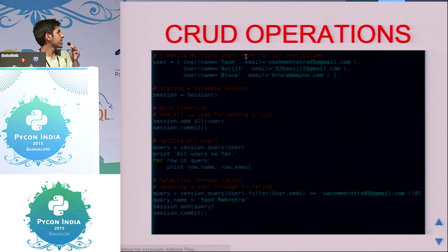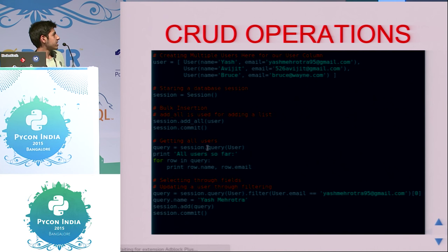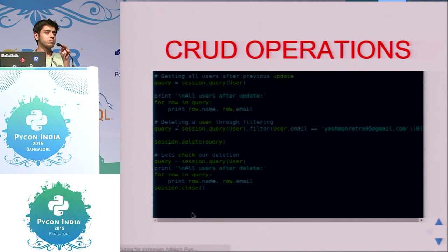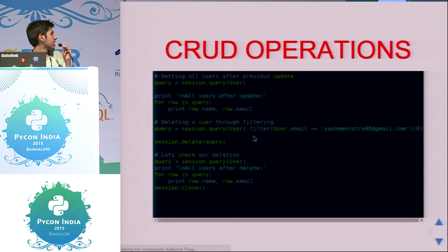This is the SQLAlchemy API. Say I have created three users and added them. This was going to be a live demo of the code, but due to some problem with the HDMI port I couldn't give it. Querying is simply easy — session.query(TableName). If you want something specific, you can use session.query with filter, using double equals to search by email. For updates, you take the object, change its name, add it to the session, and commit it. Similarly, you can delete with the session.